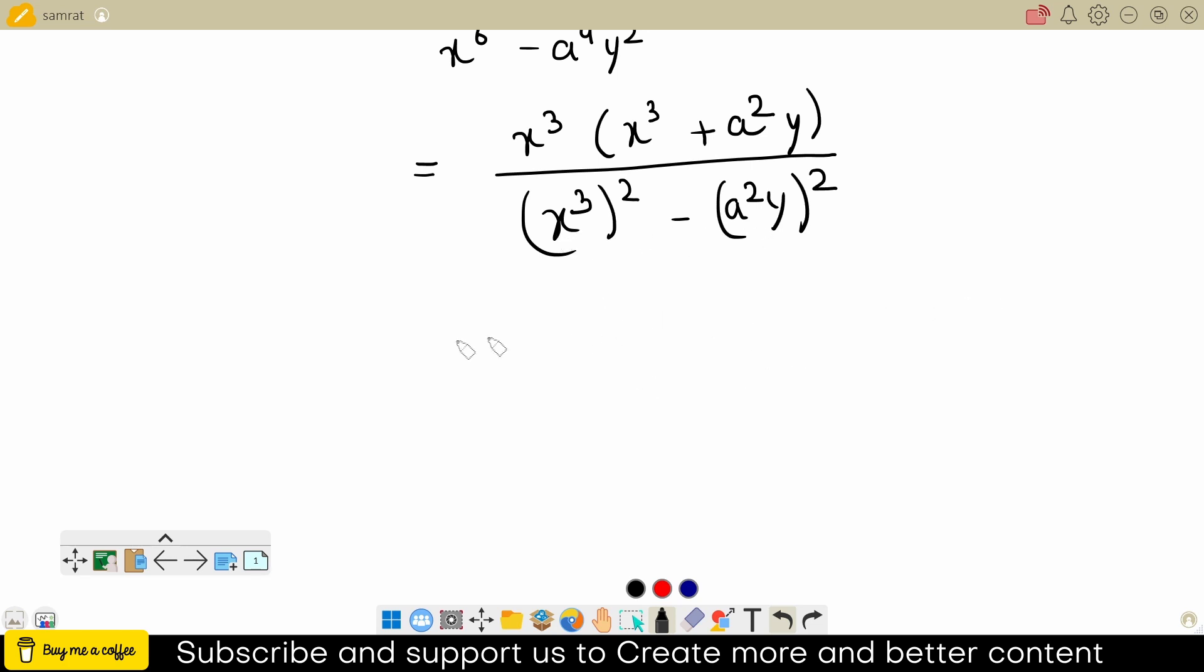The formula is: a square minus b square equals a minus b multiplied by a plus b. So I will use this identity here. Okay, so what I will get is x cube times x cube plus...